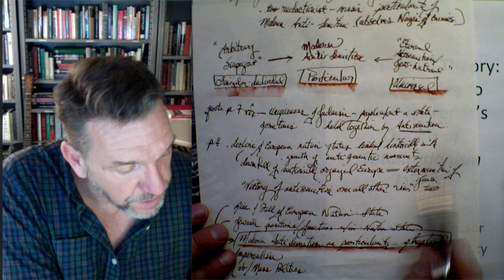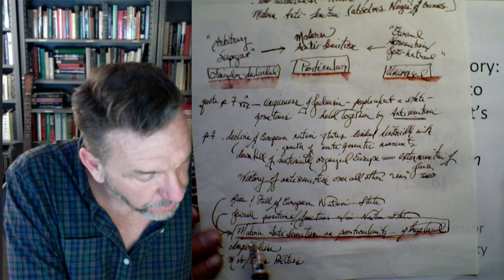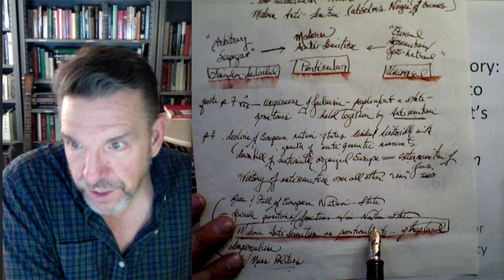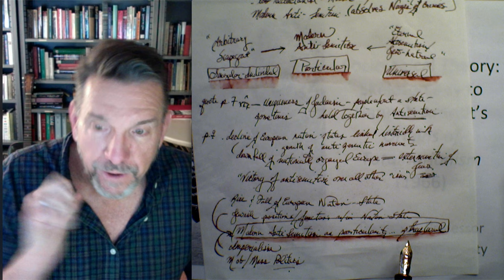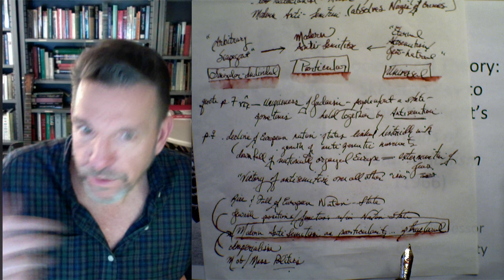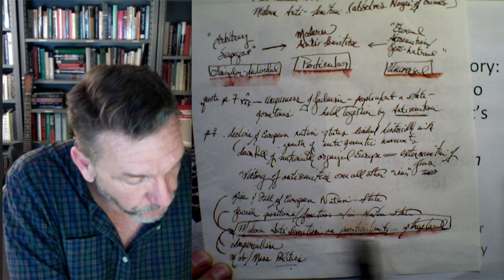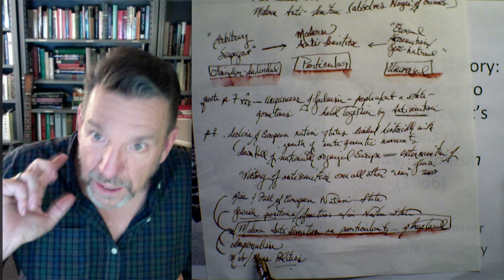The victory of antisemitism over all other 'isms' is what happens during this period. Imperialism, mob and mass politics, Jewish position and function within the nation state, and the rise and fall of European nation states — all of these things feed into modern antisemitism as a structurally determined event. These are the things she will analyze: the rise and fall of European nation states, Jewish positions and functions within those states, the rise of imperialism, and mob and mass politics.